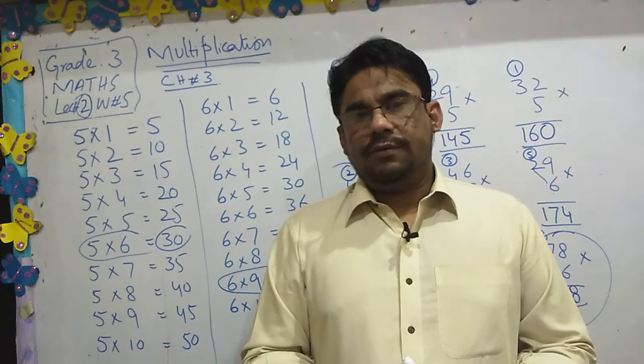6 nines are 54. So 4 here we go, 5 carry. 6 twos are 12, 12 plus 5 add equals 17.